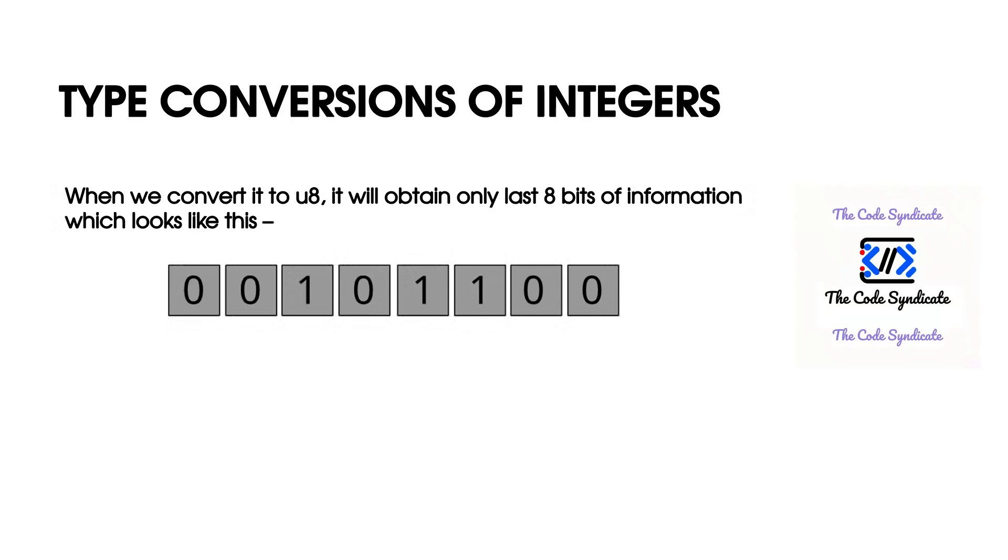When we convert it to u8 type, it will obtain only last 8 bits of information which looks like this. When we convert this from binary to decimal, it becomes 44.